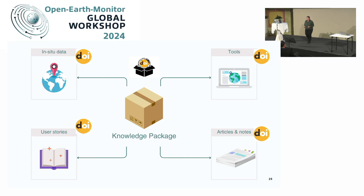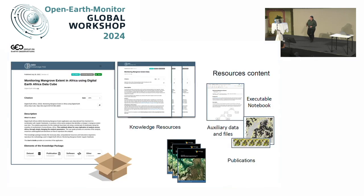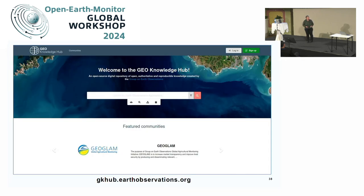I will show you this live in the GEO Knowledge Hub. This is the GEO Knowledge Hub at gkhub.earthobservation.org. It is a simplified user interface. We have featured communities — a number of communities with whom we have collaborated that are our actual data and knowledge providers. We have available engagement priorities, so I can search for applications that respond to the new urban agenda, the Paris Agreement, the different sustainable development goals, or the Sendai framework, upcoming training and events, and so forth.